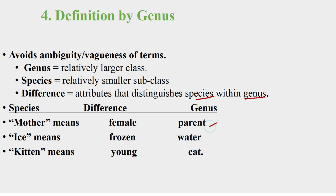For example, the genus is parent, with mother and father. The species we call mother is female. Water is the subclass or the larger class — for example, 2000 liters of water, and this is liquid.